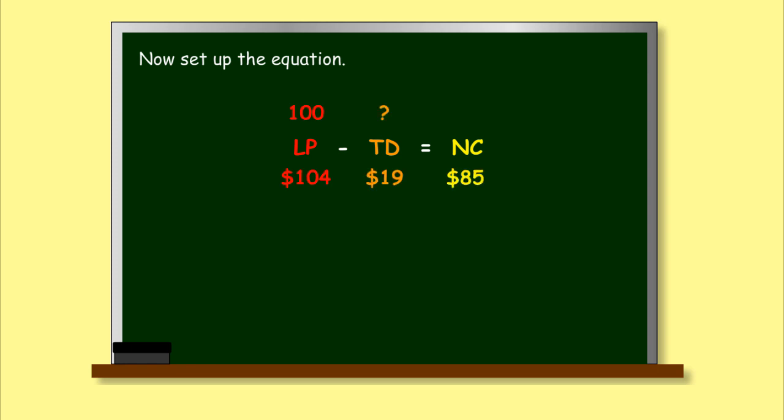LP minus TD equals NC. TDR equals 18.3 percent.